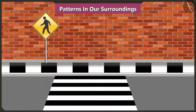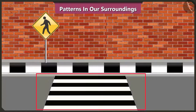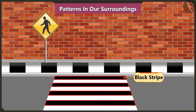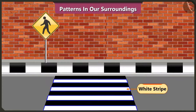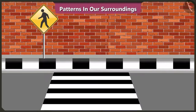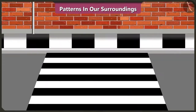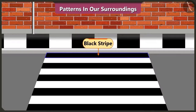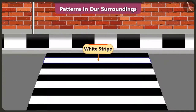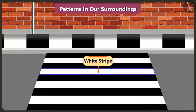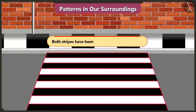Oh yes. Now look, this zebra crossing has a pattern of black and white stripes. Yes, this pattern has black, white, black, white lines. Both black and white color lines have been used repeatedly.